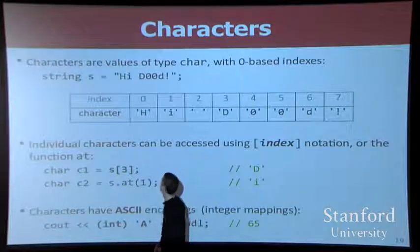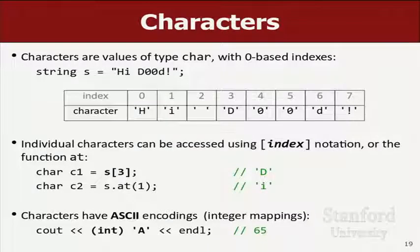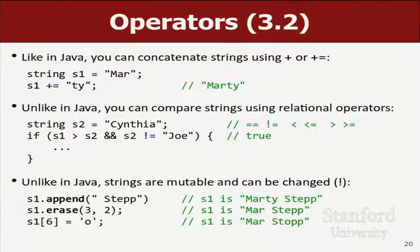The indexes are the same. They start at zero. You can access individual characters using array type notation with brackets. You can concatenate strings with plus. You can have string s1 is mar, and you could add a ty on the end, and now you have marty. I mentioned this last time.